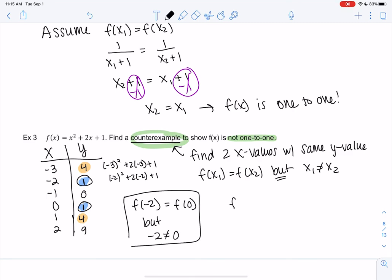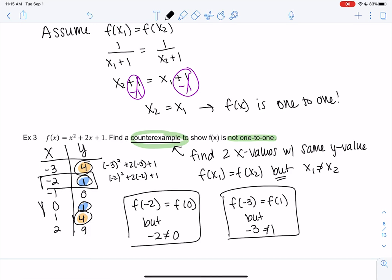If you chose the 4, f(negative 3) equals f(1), but negative 3 doesn't equal 1. That is also a counterexample. So there's lots of counterexamples. You just are basically finding an example to prove that it's no longer true. So it's a little bit guess and check to find those numbers. And there's even more if you plug in more x's. But these are proving that it's not one-to-one because I found two x values with the same y value. So not one-to-one.